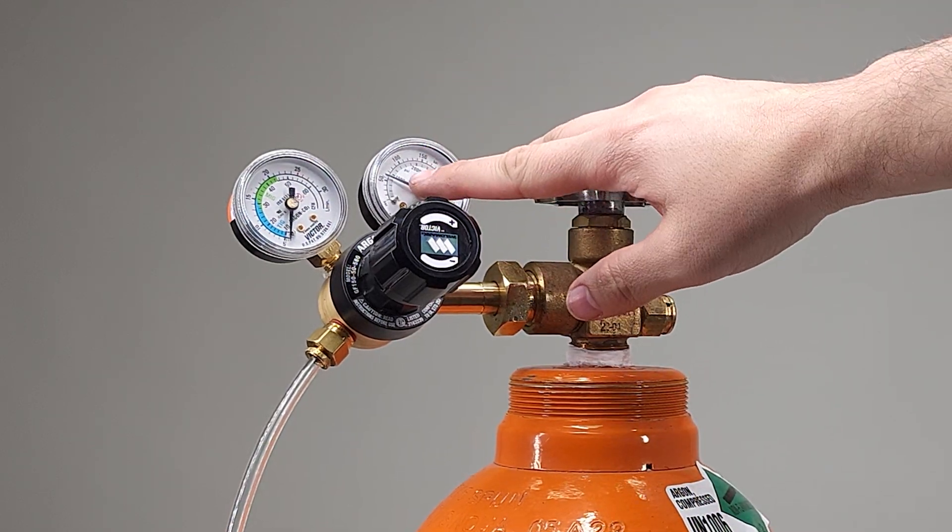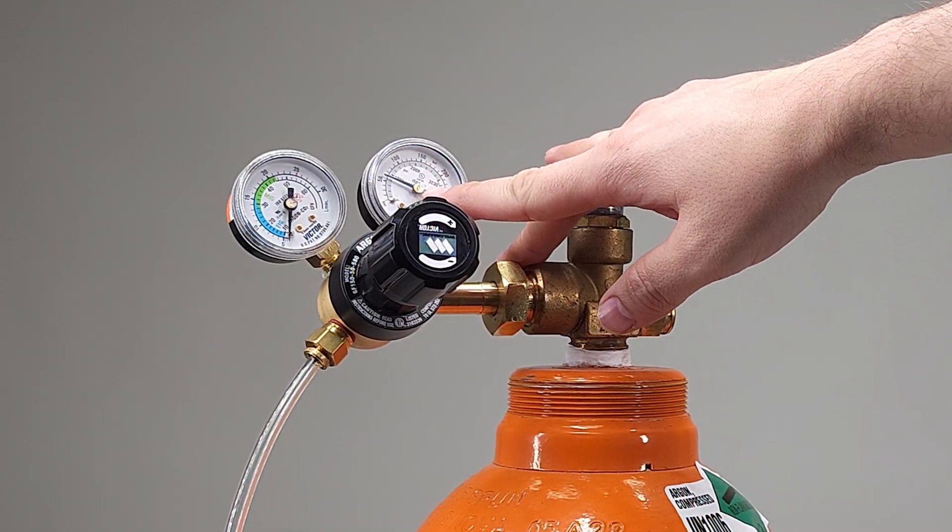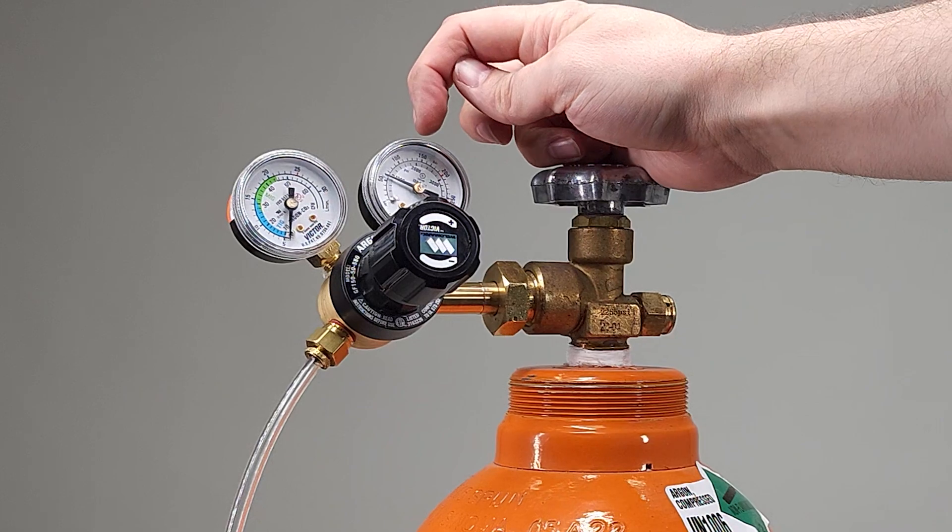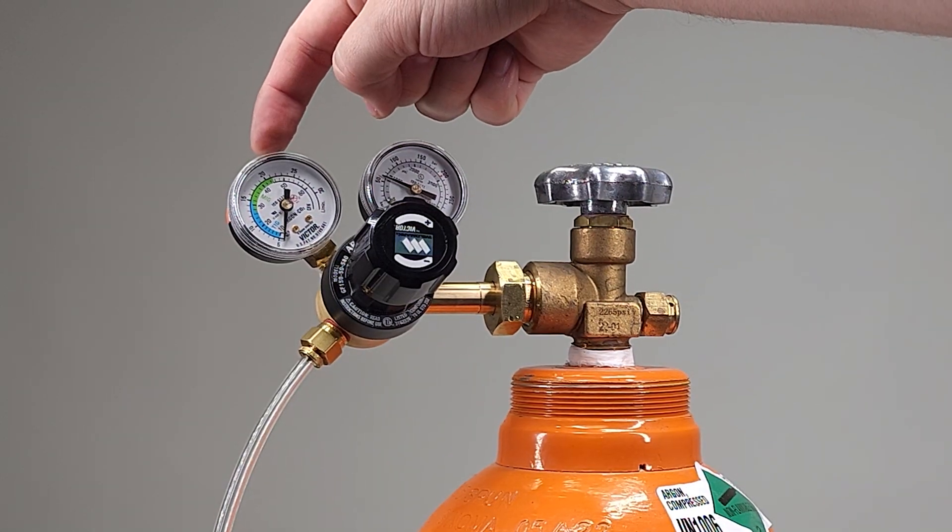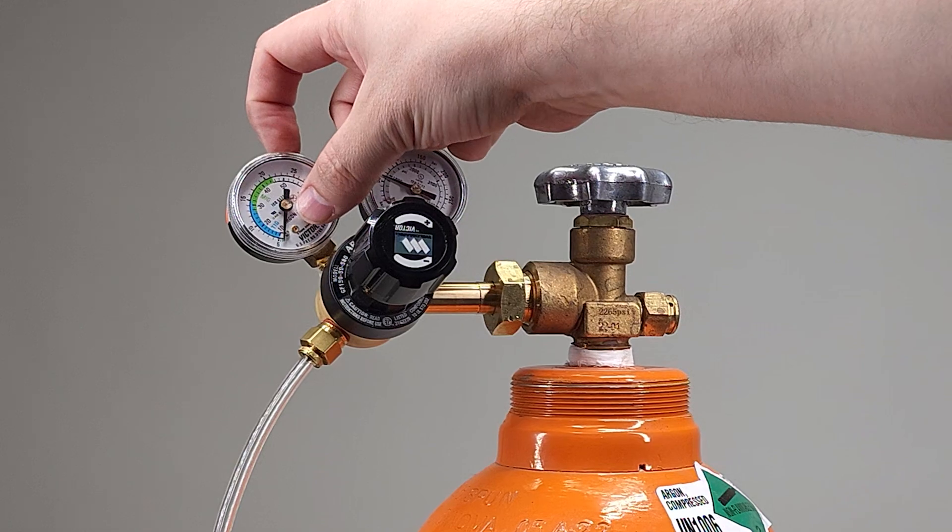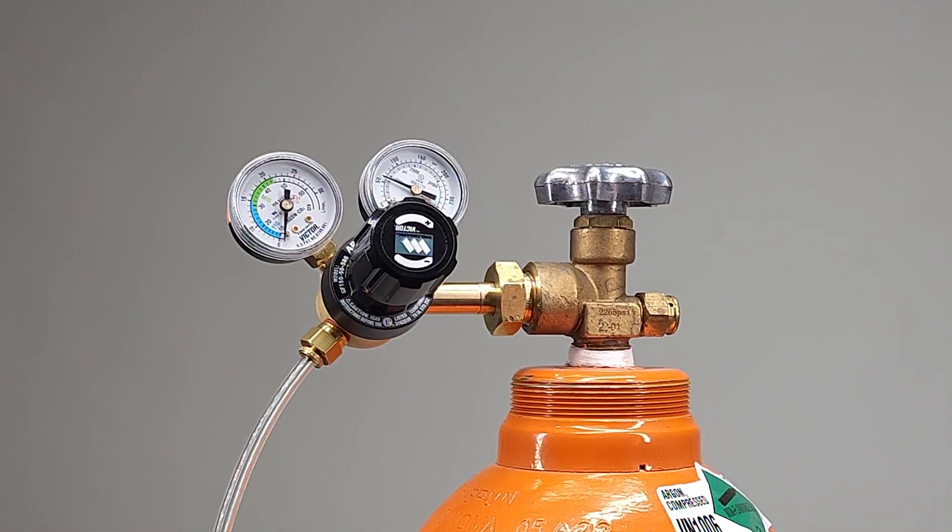Now we'll see on this right gauge that it pressurized. Max pressure is 2000 psi. On this left gauge it's going to explain how much is leaving the tank and our goal is to set it to 7 liters per minute.